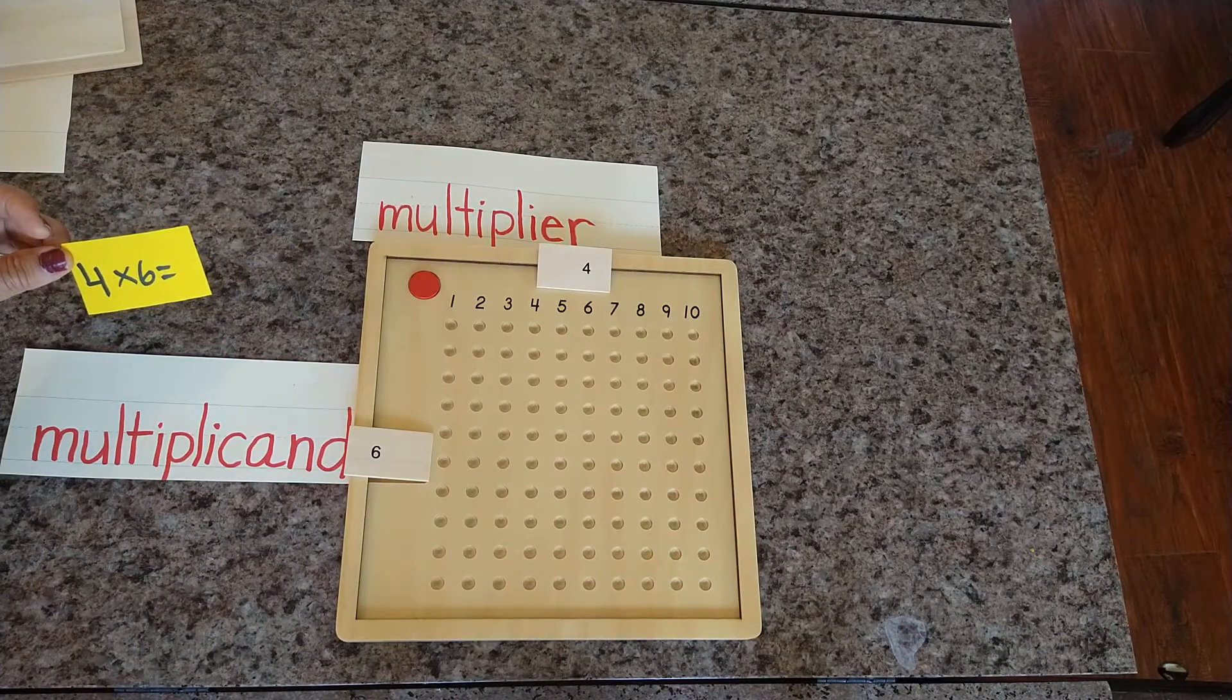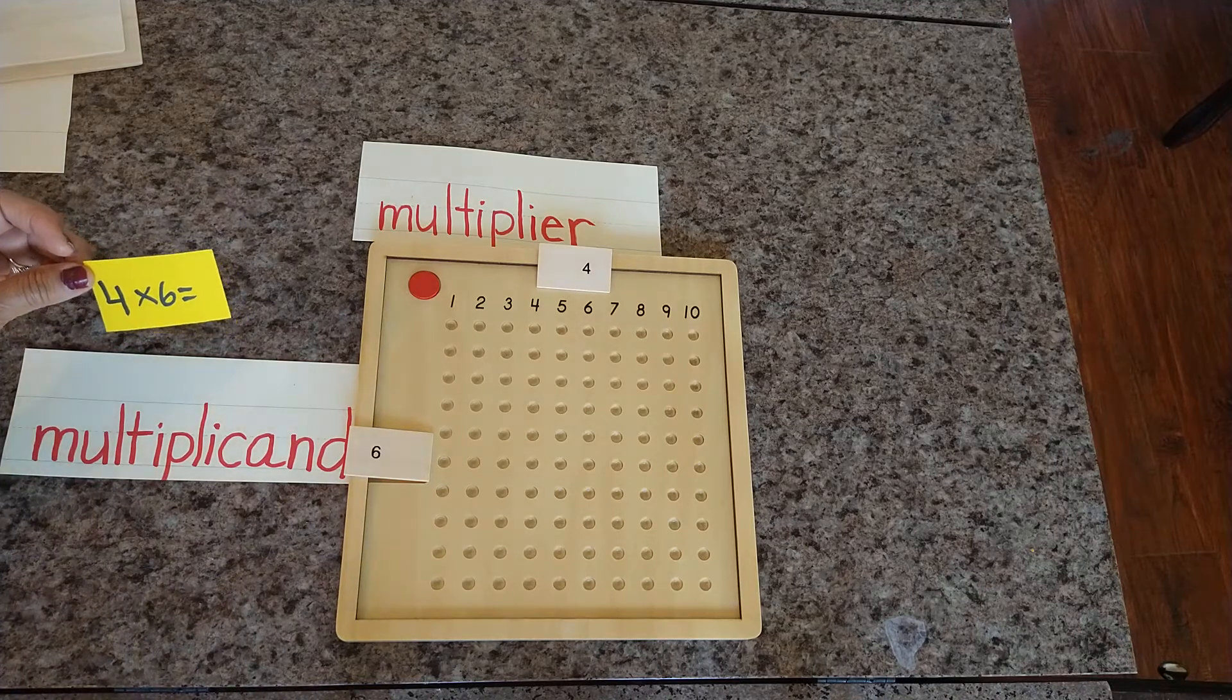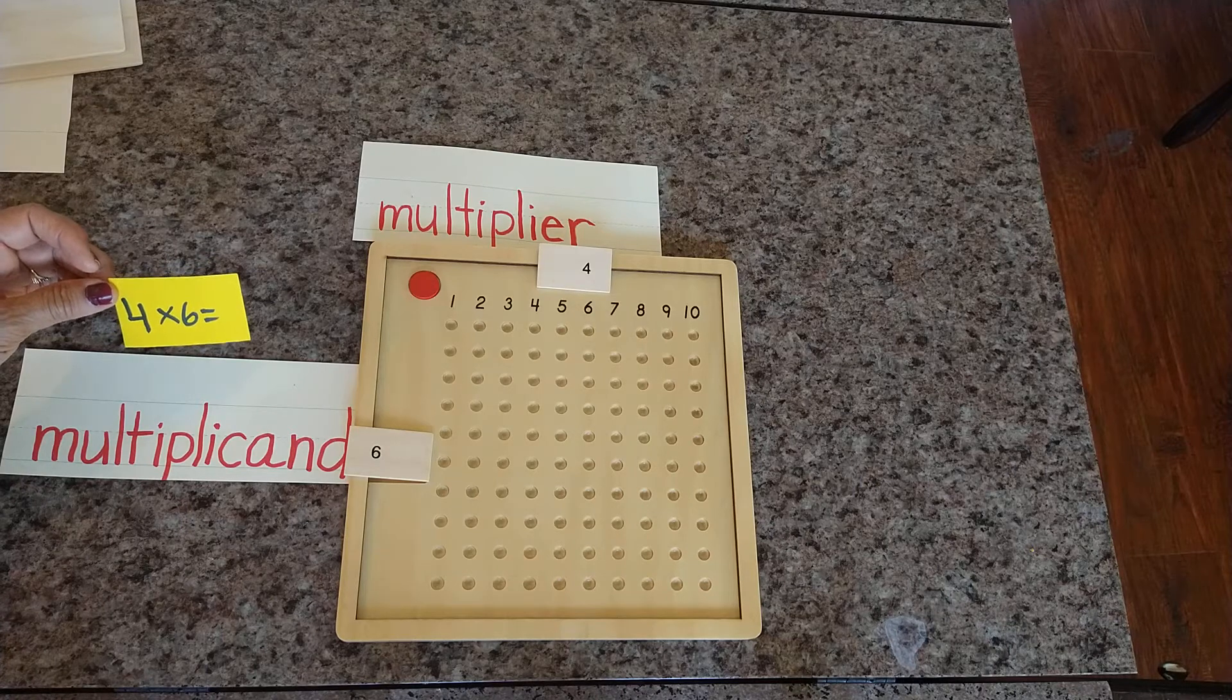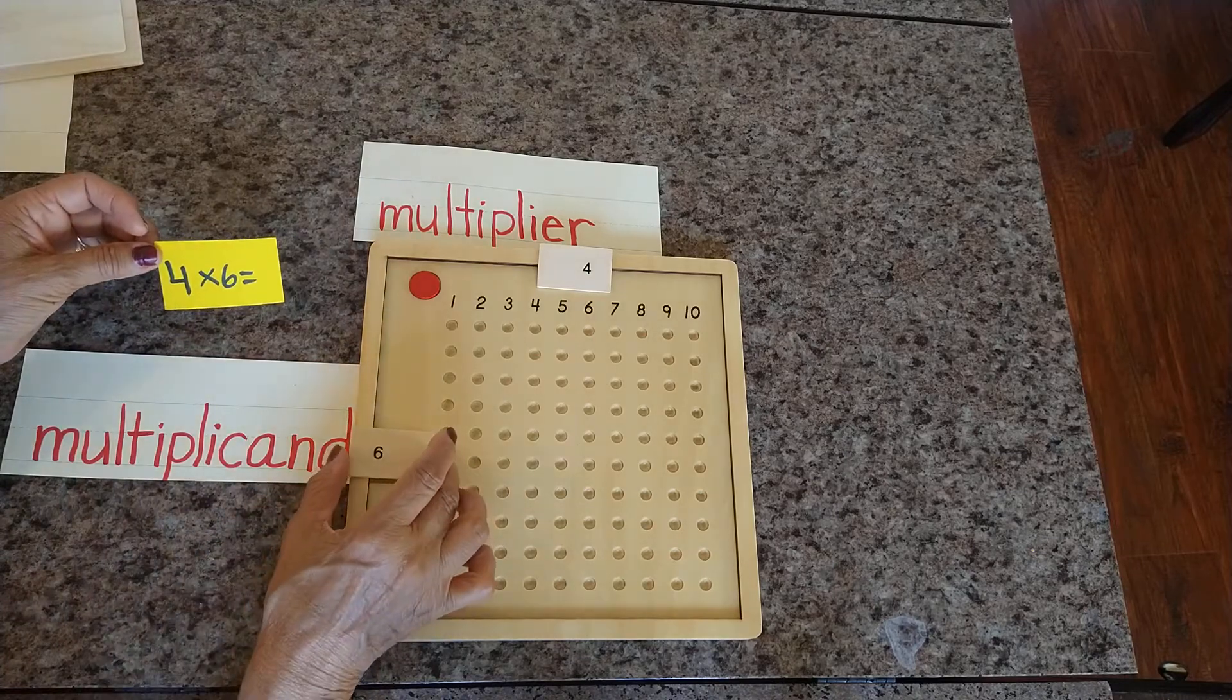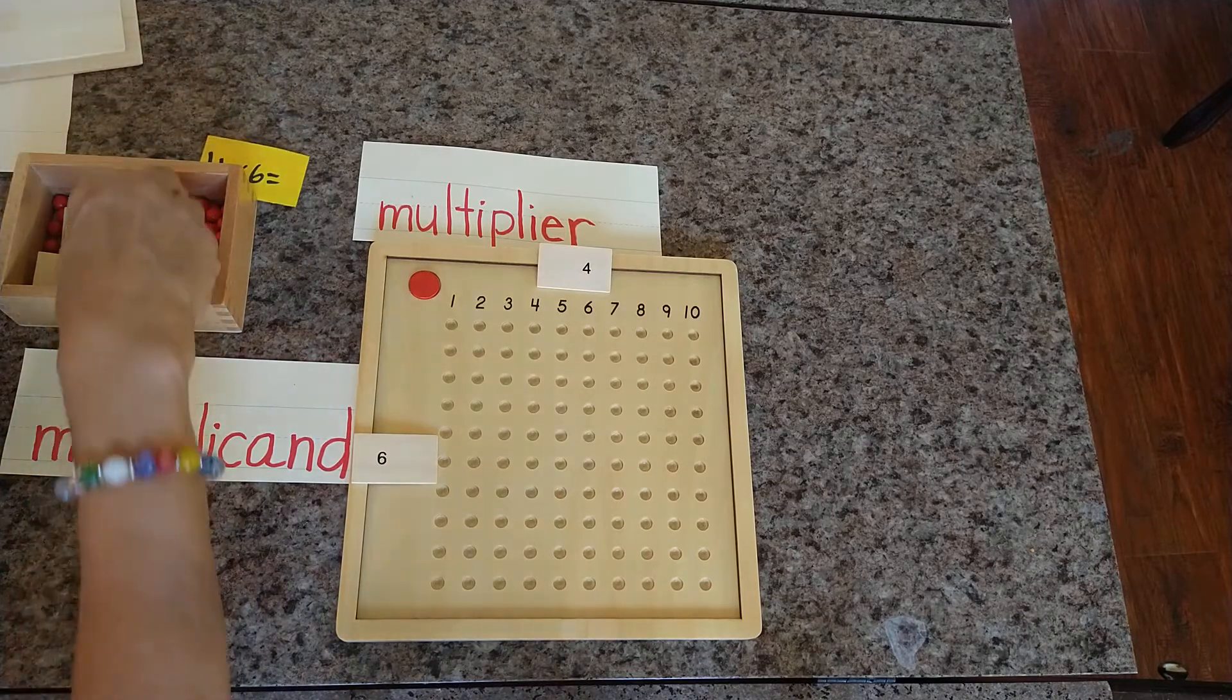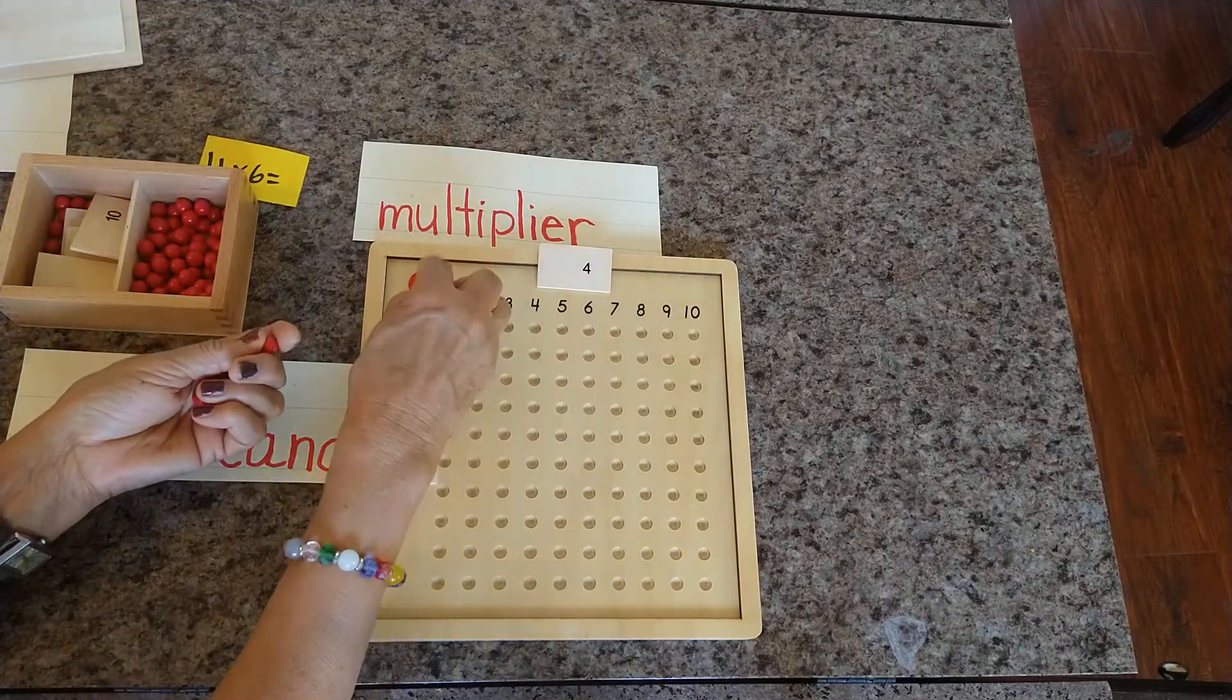The multiplicand tells how many are in a set. So let's bring the beads. Please count with me. So I'm going to take 6 beads. I'm going to slide this right here.